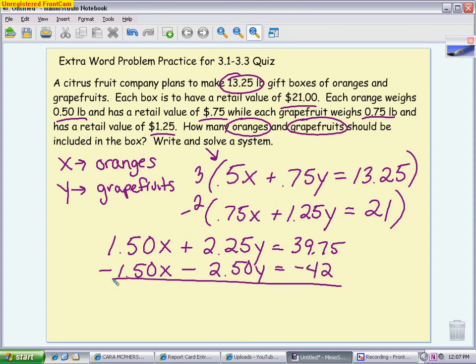You know you've been successful in the way you've adjusted if you get a column that eliminates, so we no longer have X's. We're going to work with the rest. We're going to add 2.25Y to minus 2.5Y, which gives you negative 0.25Y. And again, you can use your calculator for that arithmetic. And then you're going to take 39.75 and subtract 42, which is going to give you negative 2.25. Divide by negative 0.25. What you'll notice is when you divide a negative by another negative, you get a positive answer, which is good. If we get a negative answer, we know there's a problem because we can't have a negative fruit. We get 9.